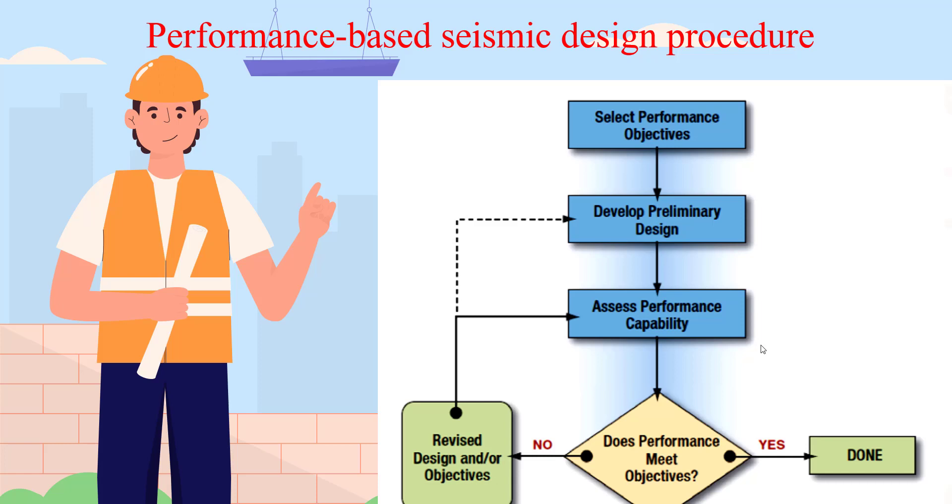At the end of the first attempt, we check if the performance meets the objective. If yes, the process is complete. Otherwise, cross-sections may need to be increased or decreased.